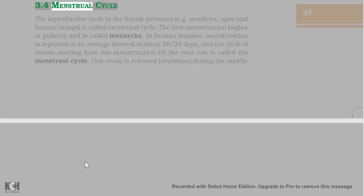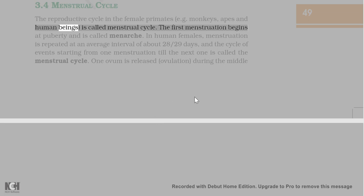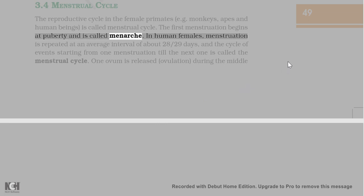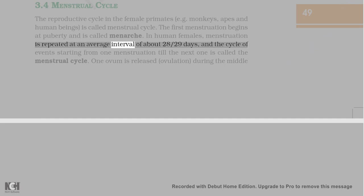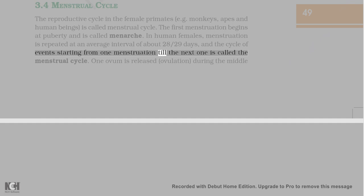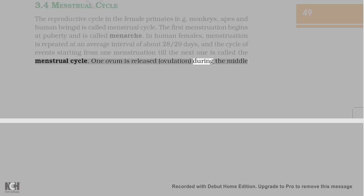The reproductive cycle in female primates, e.g., monkeys, apes, and human beings, is called the menstrual cycle. The first menstruation begins at puberty and is called menarche. In human females, menstruation is repeated at an average interval of about 28-29 days, and the cycle of events starting from one menstruation till the next is called the menstrual cycle. One ovum is released (ovulation) during the middle of each cycle.